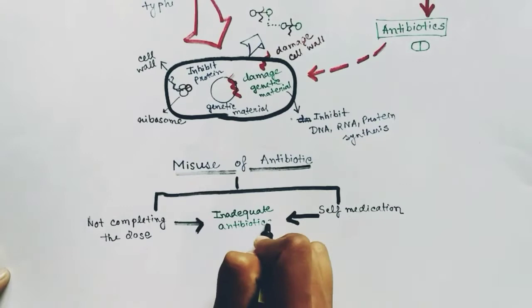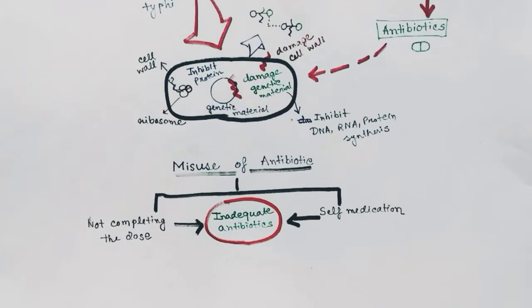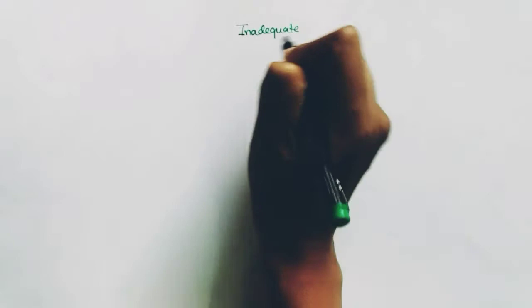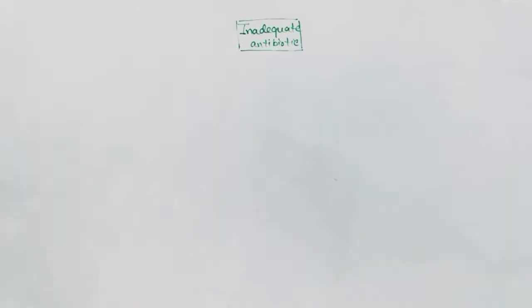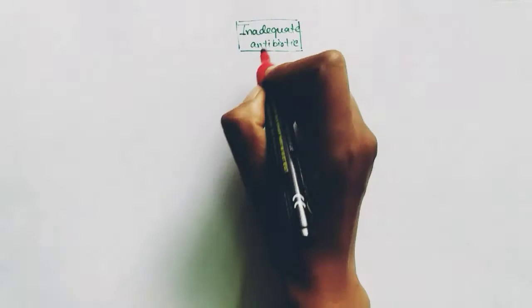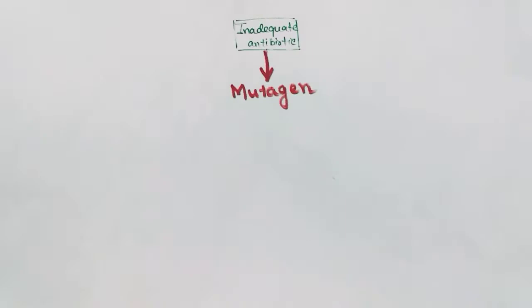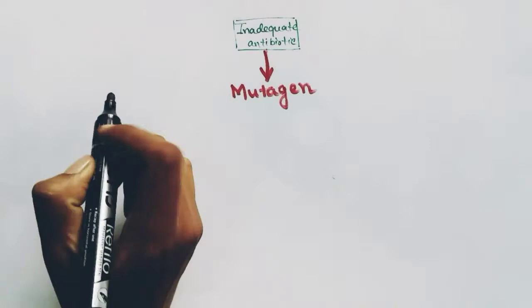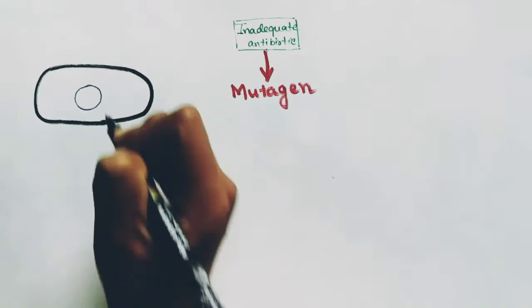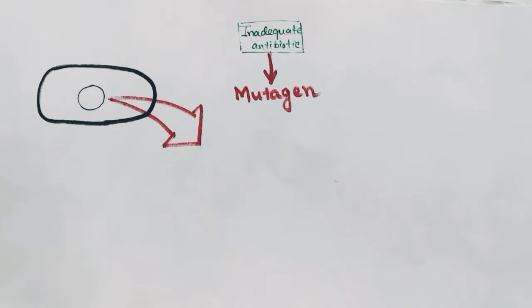An inadequate amount of antibiotic is very dangerous for us. This inadequate amount means it is not the exact dose needed to kill the bacteria. When the amount is inadequate, the antibiotic can act as a mutagen. A mutagen means something that is capable of bringing about mutation. Mutation means the change of genetics inside the cell.